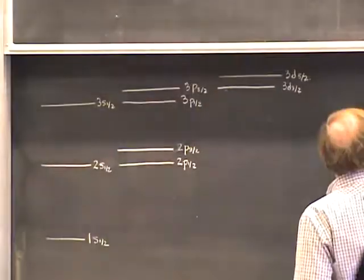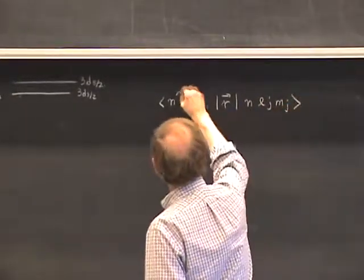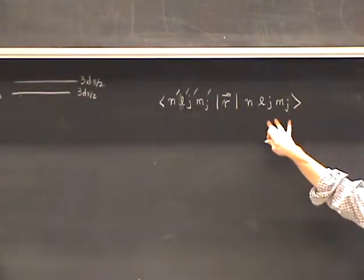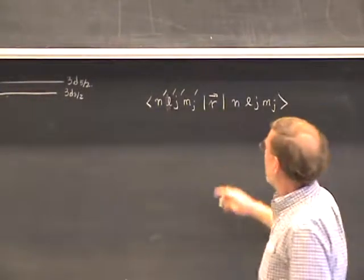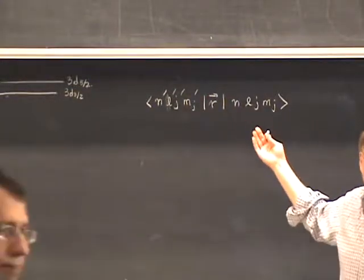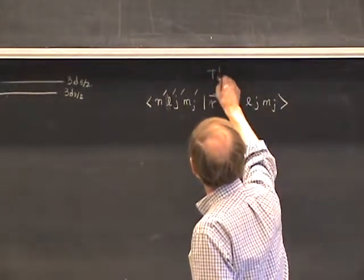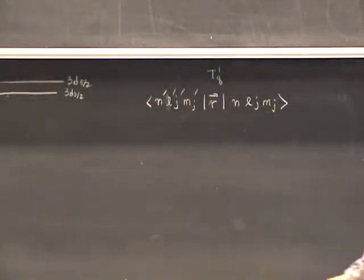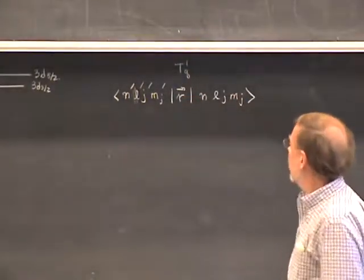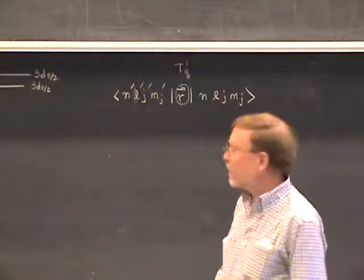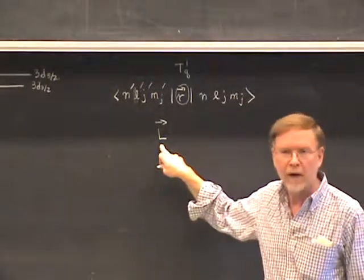In the fine structure model the states are labeled by n, L, J — for example n=1, J=1/2. We put primed numbers on one side to indicate an upper state and unprimed on the other to indicate the lower state. We use the Wigner-Eckart theorem for this — it is an exercise in determining selection rules. We first notice the position operator is a T1q operator: it is a k=1 irreducible tensor operator. The position operator is a purely spatial operator, meaning it transforms as a vector operator under purely spatial (orbital) rotations generated by L.